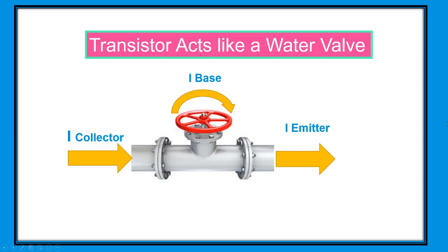Transistors act like a water valve. The base current IB controls the valve of the collector current IC and emitter current IE. The handle of the valve is controlled by IB — more base current is analogous to a more open valve.